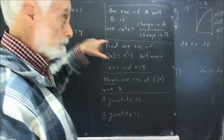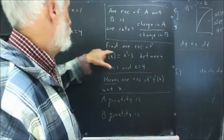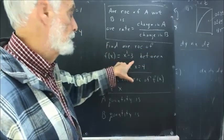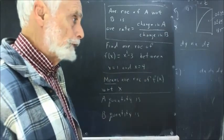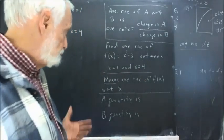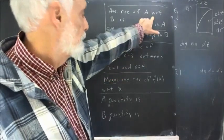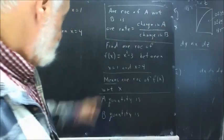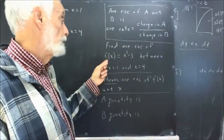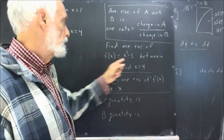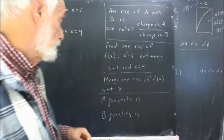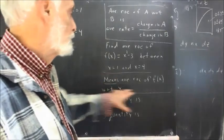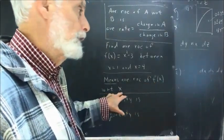A question very similar to the one we have here is to find the average rate of change of F(x) = x² − 3 between x = 1 and x = 4. We don't have the words 'with respect to' stated here, but they are essential. If you're finding the average rate of change of a function, it's with respect to its variable unless it explicitly states differently — meaning this is the average rate of change of F(x) with respect to x.